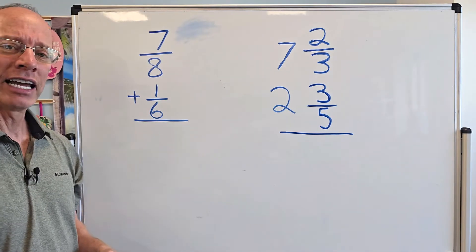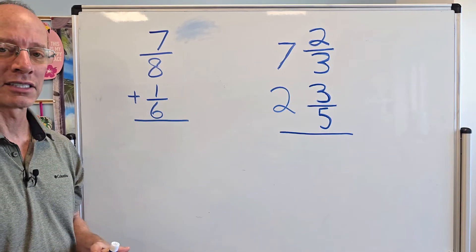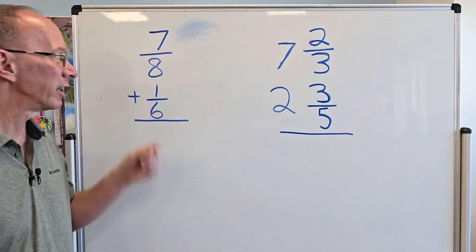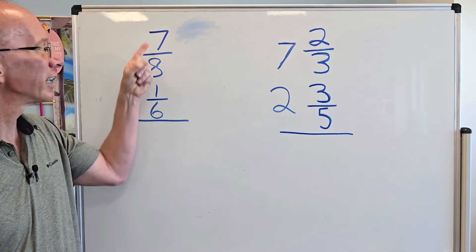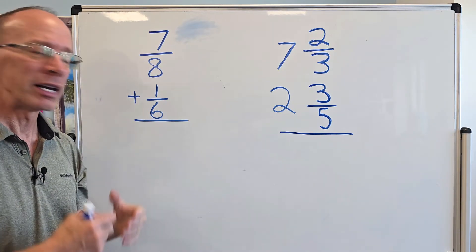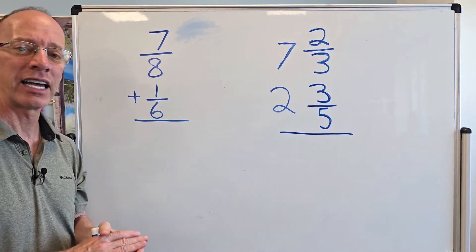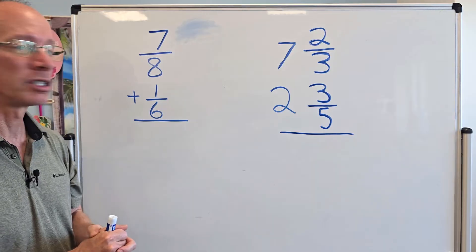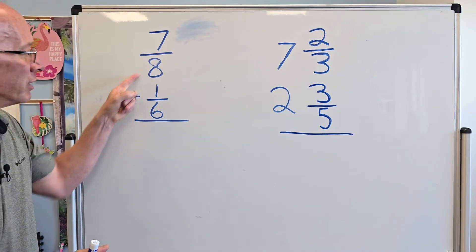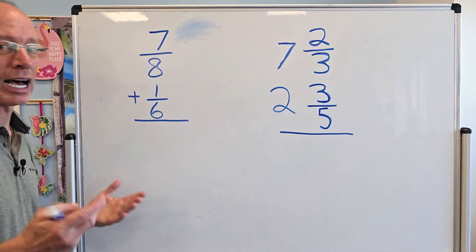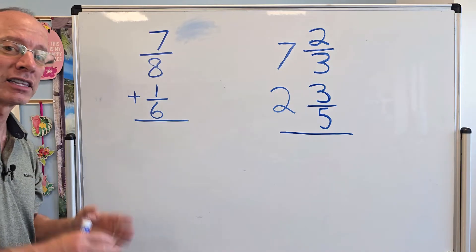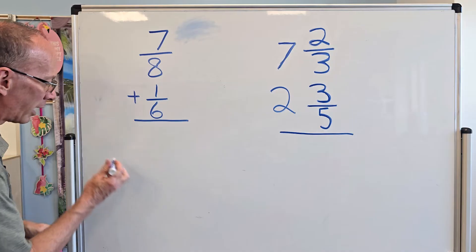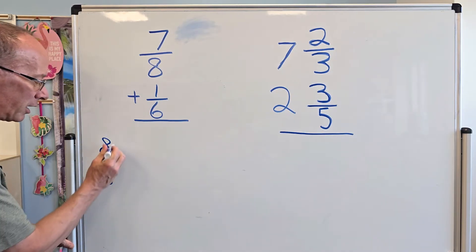Here's our first problem: 7 eighths plus 1 sixth. Now, my eyes are always looking at the denominator. This is called the denominator. That's called the numerator. And when I add fractions, I like to have the denominators as the same number. Makes it way easy to add or subtract. These do not have the same number. How do I do it? Well, I'm going to find the least common multiple of 8 and 6.